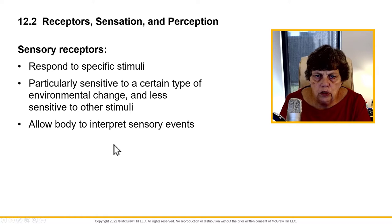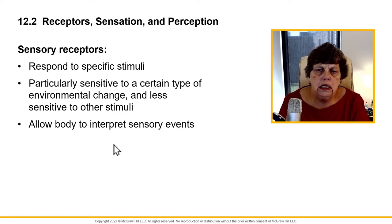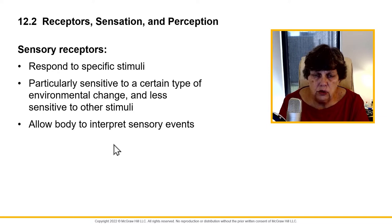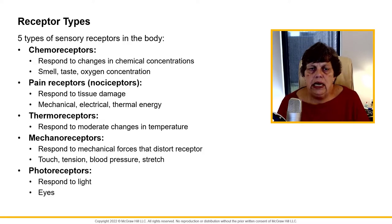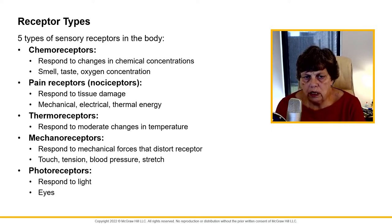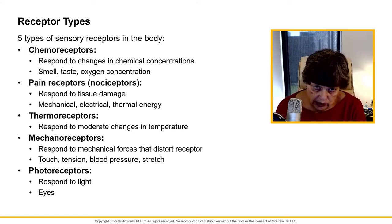So that's what we're going to look at. With these sensory receptors, they respond to a specific stimuli — they are particularly sensitive to a certain type of environmental change and less sensitive to others. We have five types of sensory receptors: chemoreceptors, pain receptors, thermoreceptors, mechanoreceptors, and photoreceptors.